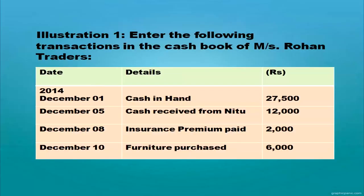Here is a question: prepare a simple cash book with cash balance at the beginning of the month — that is, cash in hand. An opening cash balance is given. Transactions include cash receipt from Neetu, insurance premium paid, and furniture purchased. Opening balance is recorded on the debit side. Cash receipt from Neetu: entry is cash account debit to Neetu. Insurance premium: debit to cash. Furniture: debit to cash. Let us see how this appears in the cash book.